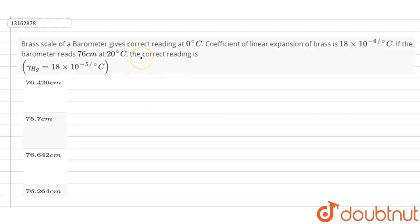Since brass here will show some linear expansion due to the rise in temperature from 0 to 20 degree Celsius, we will find the scale reading at 76 cm.